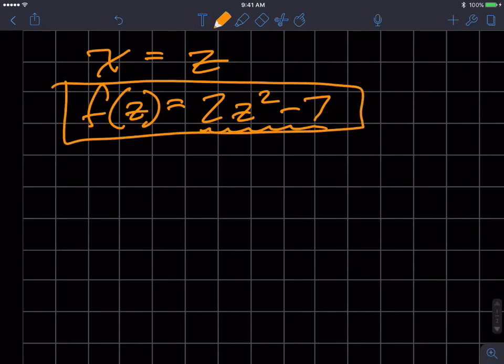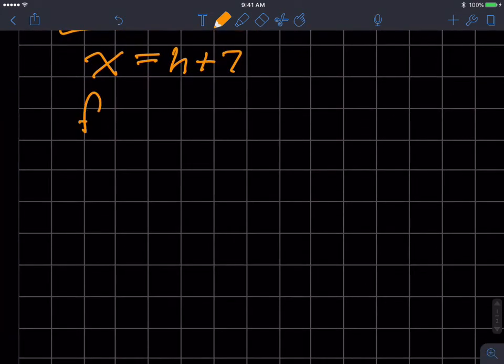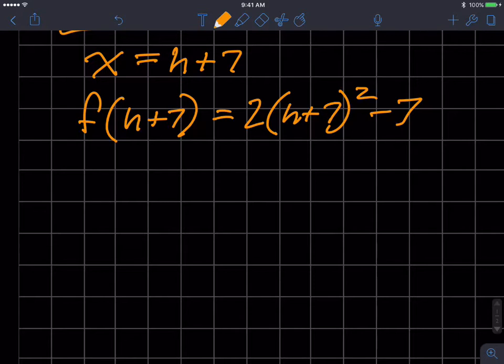Let's go a little more complicated. What if I want to evaluate the function when x is equal to h plus 7? Then whenever I have an x, I'm going to substitute an h plus 7.